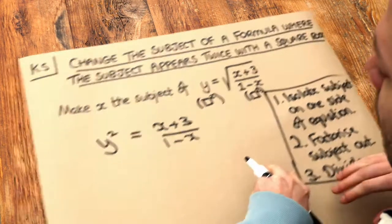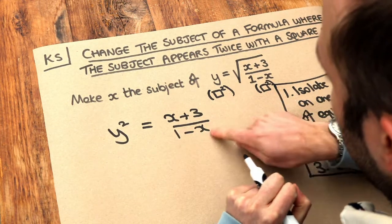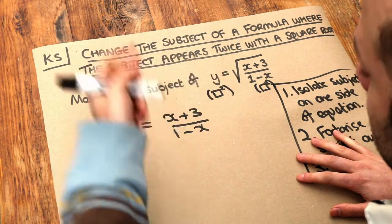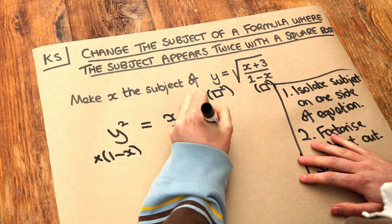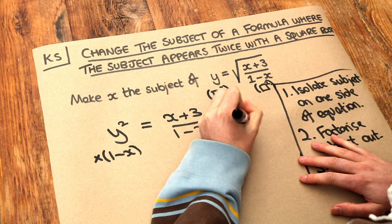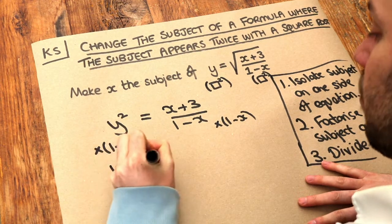Now the x is still not out in the open, so we need to somehow get rid of this fraction. To get rid of that over 1 minus x, we can just do the opposite of dividing by 1 minus x, which is to multiply both sides by 1 minus x.